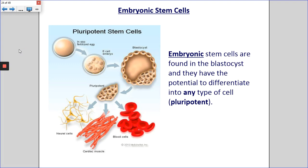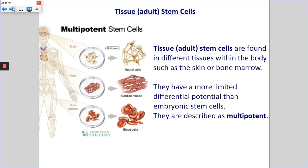Focusing on embryonic stem cells first - these cells have the most potential. They are found in something called the blastocyst. As you developed, you used to be a zygote, a single cell, and then that cell divided into two, into four, into eight, and so on, until it became a ball of cells - a blastocyst. The cells within the blastocyst are the embryonic stem cells. You, as you are now, with your more than 200 different types of cells, all came from the blastocyst. So these embryonic stem cells have the potential to become any type of cell within the human body. They're described as being pluripotent because they have this potential to become any type of cell.